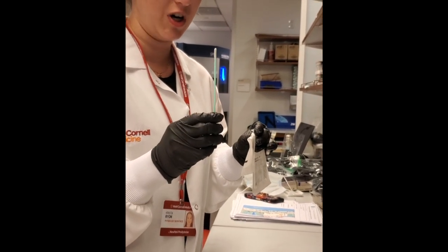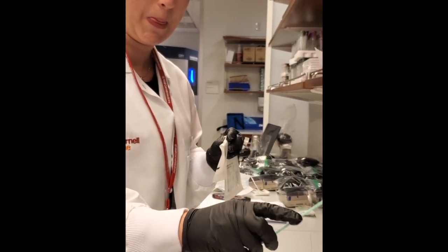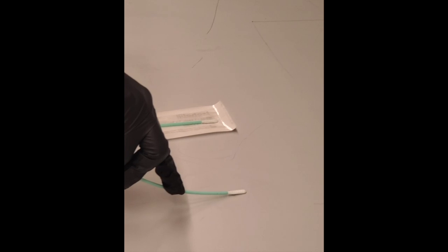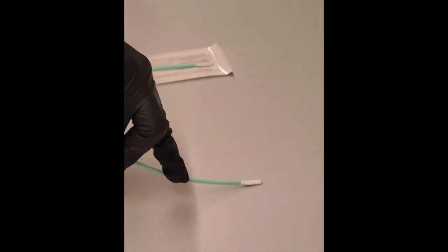Once you have a surface to swab, look at your surface, make sure you have a good area, and apply downward pressure at a 45 degree angle.